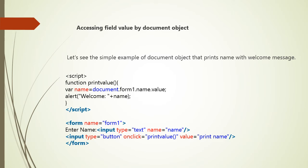Let's see a simple example of the document object that prints a name with a welcome message. In the script, we define a function printValue where: name = document.form1.name.value. Then we alert 'Welcome ' + name. In the form, we set name='form1', add a text input with name='name', and a button with onclick calling printValue(). This will simply print the name with a welcome message.